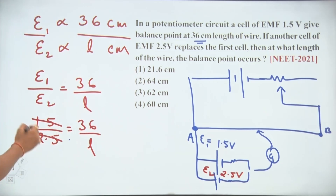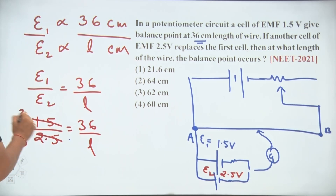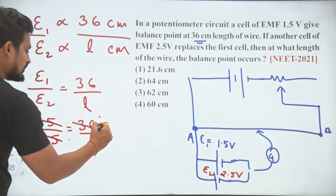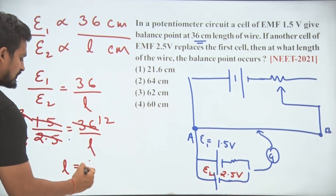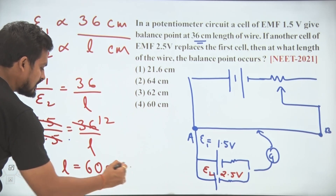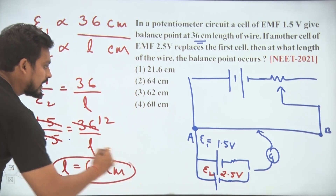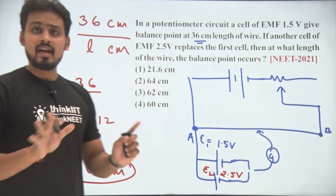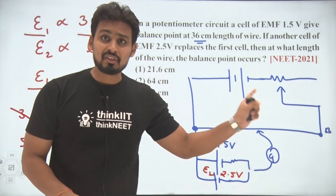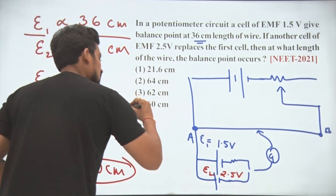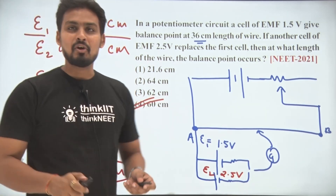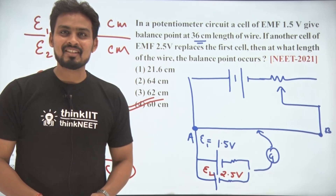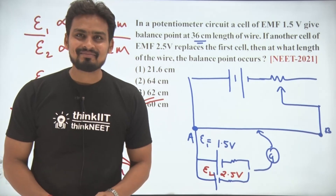Cancelling out the common factor of 5, we get 3 upon 5 equals 36 by L. Therefore L becomes 60 centimeter. The final answer for this question is 60 centimeter. I hope each and every one of you have understood this. Thank you.